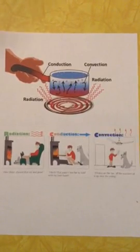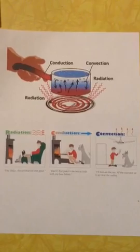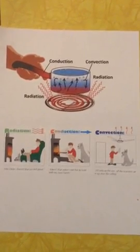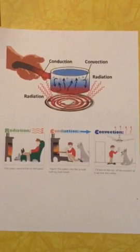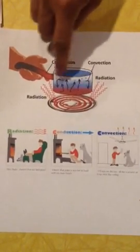Convection occurs in liquids and gases only, and it's the transfer of heat through movement of particles or molecules. Warm particles rise through cool particles and fill in the spaces below, sort of in a circular motion that you see here.